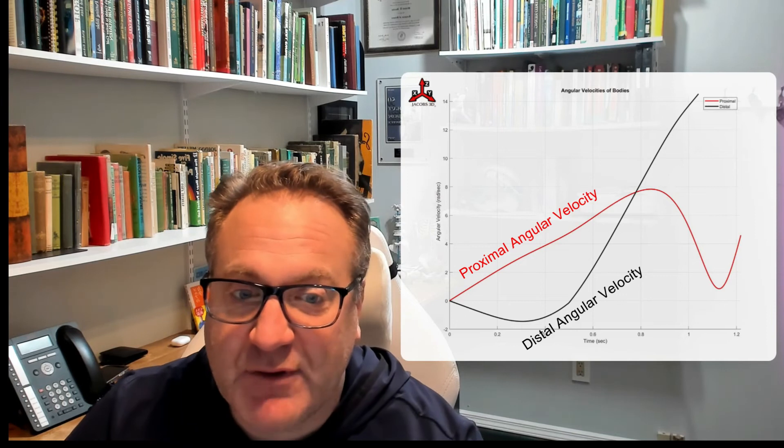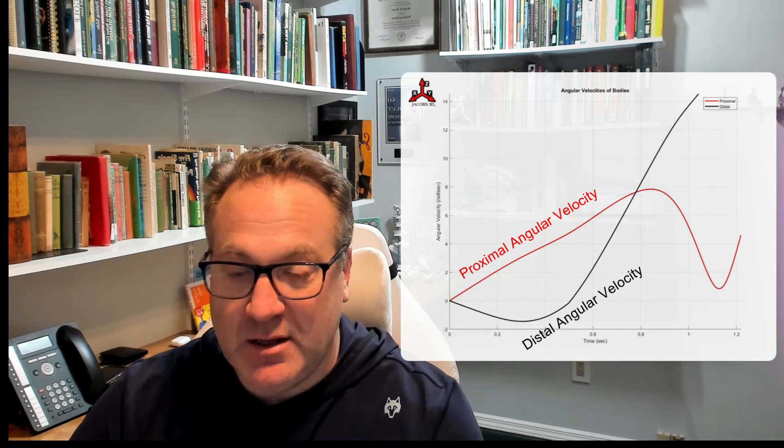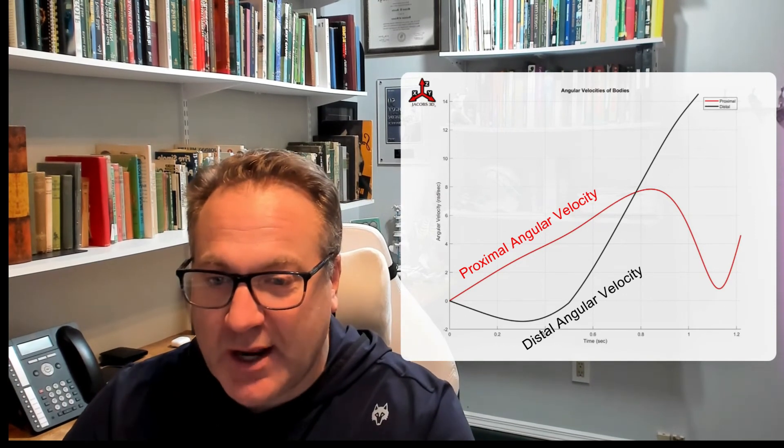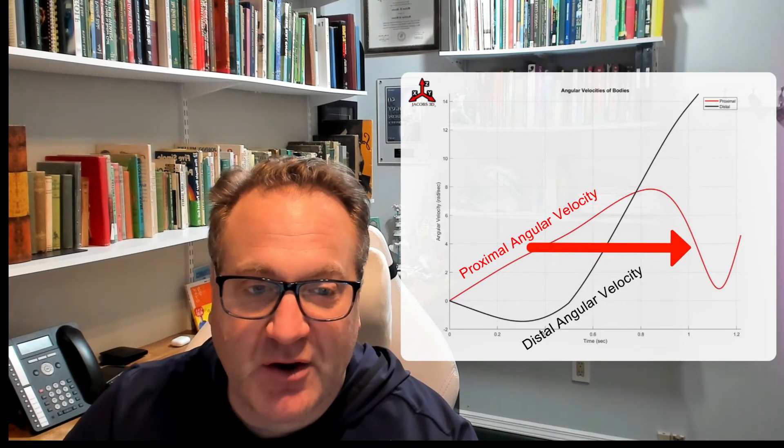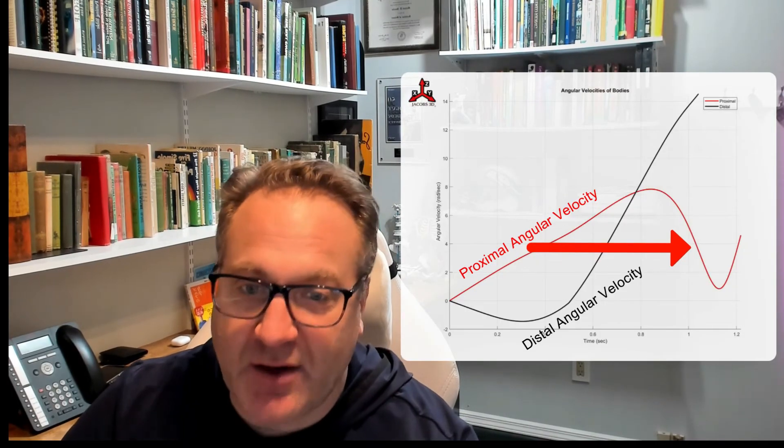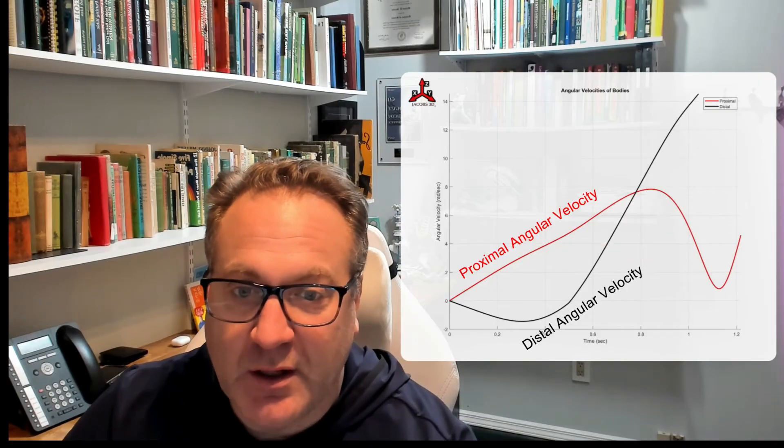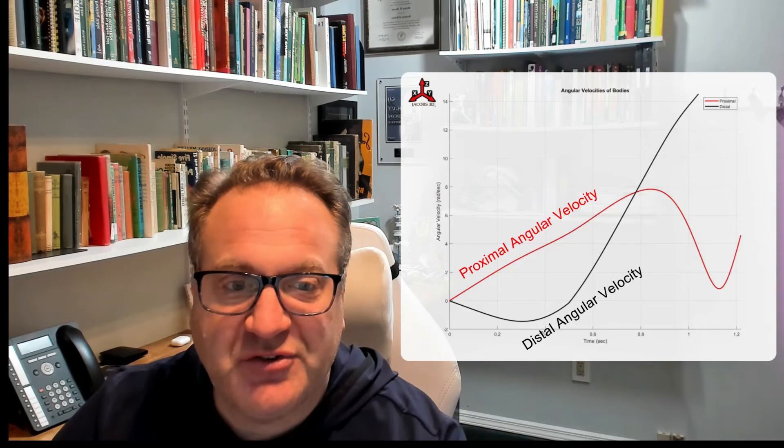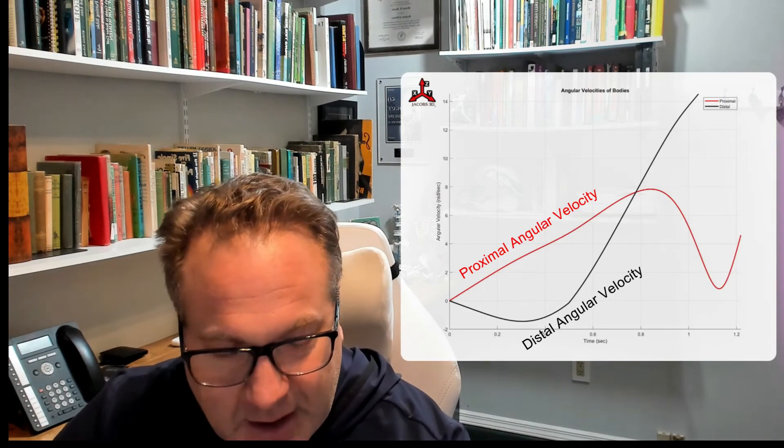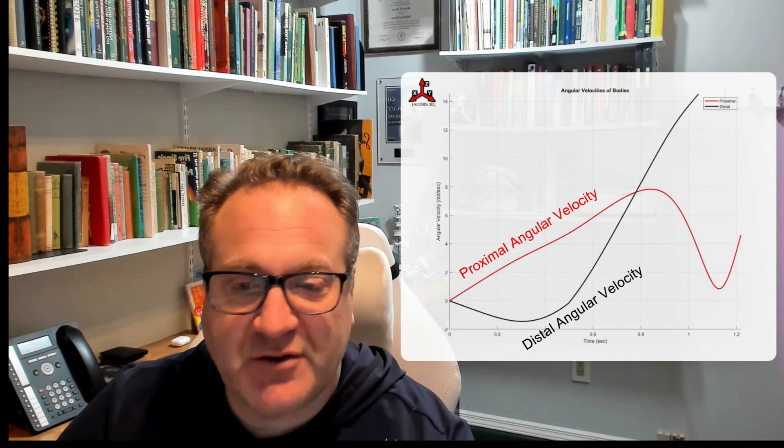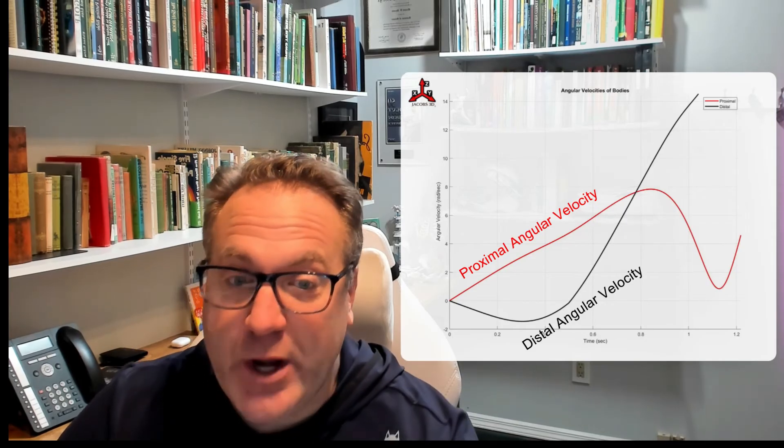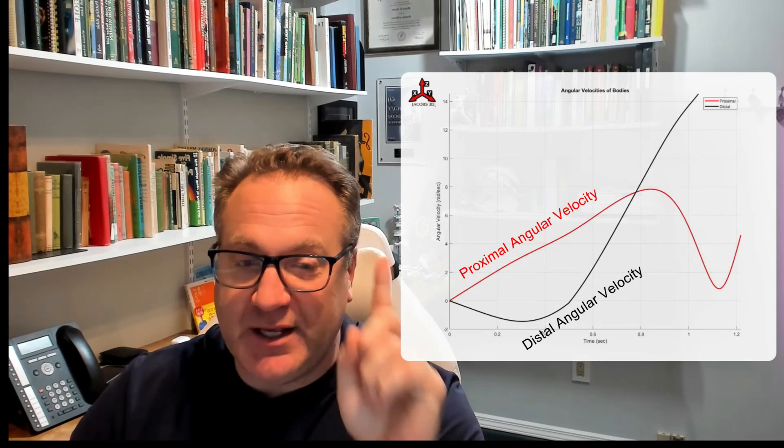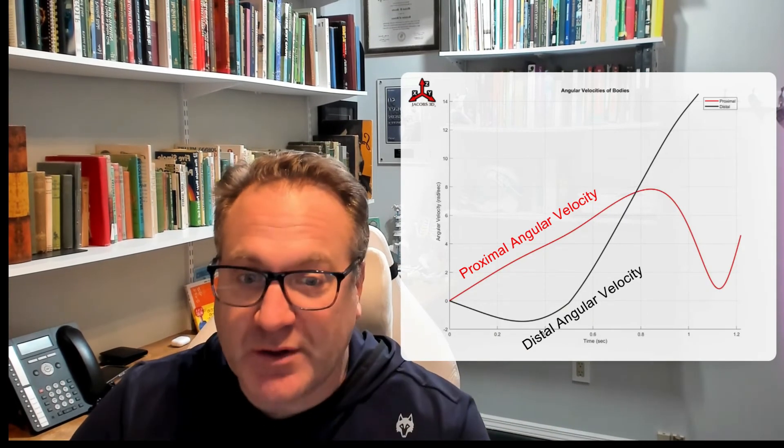And therefore, even though I am applying a constant torque at that proximal link, you'll notice that there is an angular slowdown, a considerable one, well more than a 50% slowdown angularly here in the proximal link, yet we were still driving that link with positive torque the whole time.